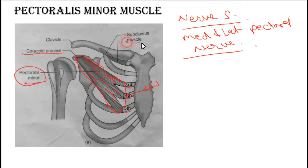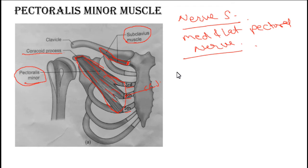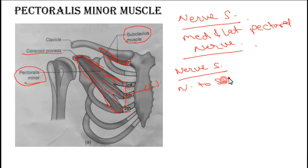Then we have one small muscle, the subclavius. It takes origin from the first costochondral junction and goes upward and laterally toward the clavicle, inserting at the subclavius groove on the inferior surface of the clavicle. It is supplied by the nerve to subclavius.